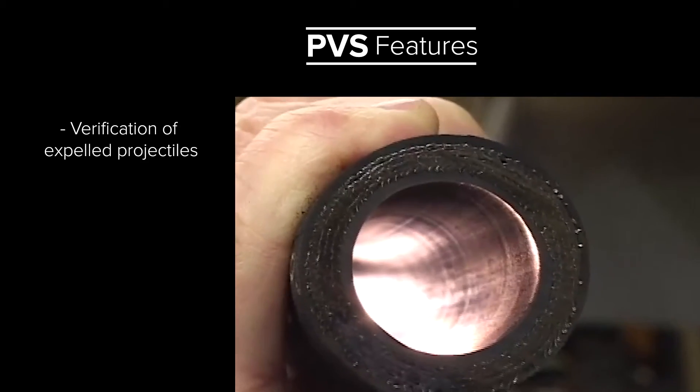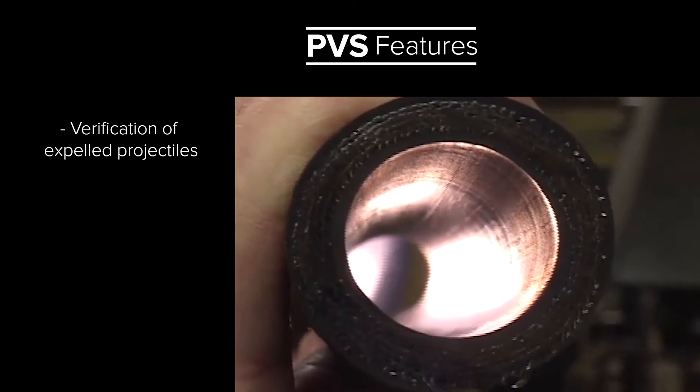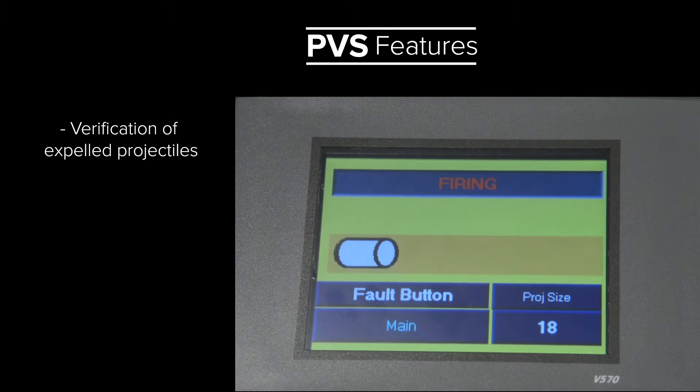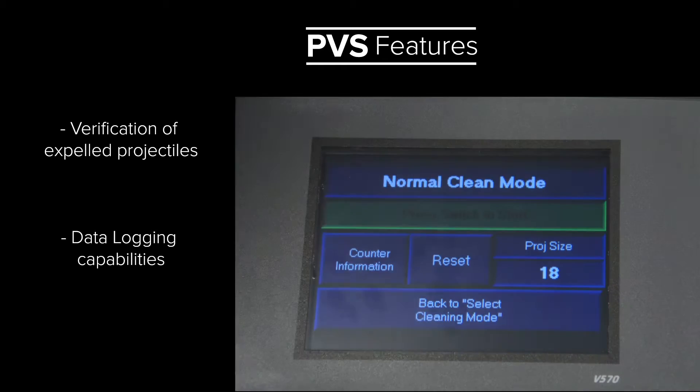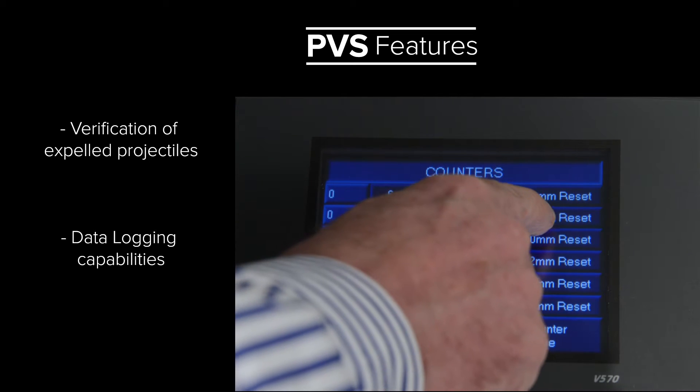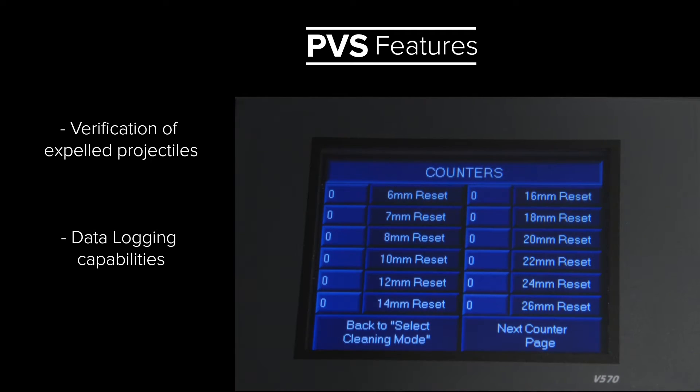Electronic verification ensures that a projectile is never left in the hose or tube assembly by mistake. The PVS-G3 also has built-in data logging capabilities. The projectile size and quantity being fired are verified and logged into the built-in counter.